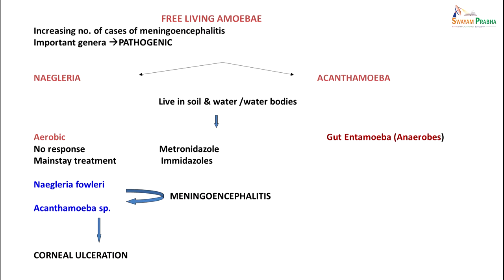They are all free-living amoebae, but they are increasingly becoming more common in causing meningoencephalitis - they are important genera which are seen to be pathogenic. Usually they live in soil and water bodies. Naegleria is aerobic while Acanthamoeba is anaerobic. They have no response to the main treatments for amoebae like metronidazole or amoebicidal drugs - they do not respond to these drugs and they usually cause encephalitis. Acanthamoeba species can also cause corneal ulceration in patients using contact lenses in contaminated water.